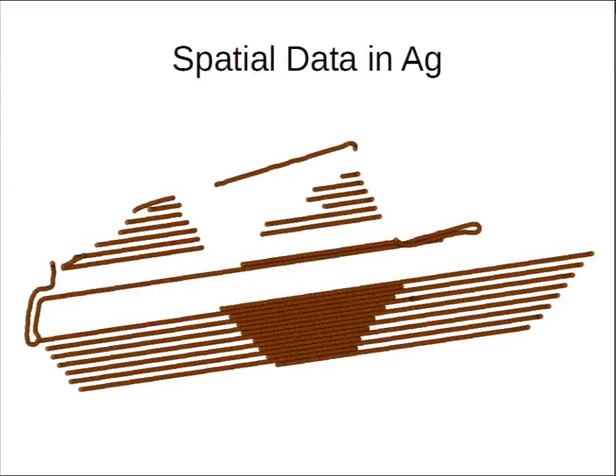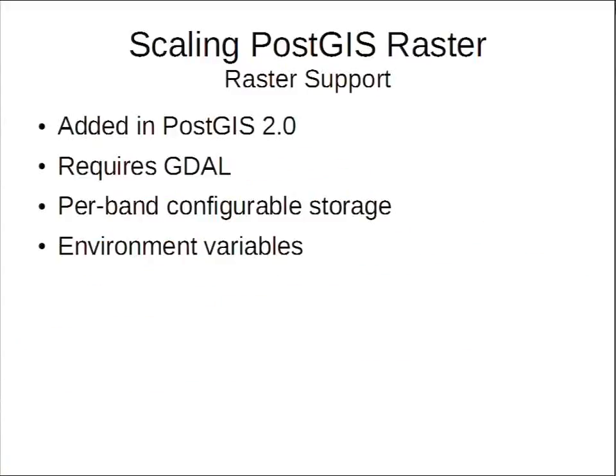I'm going to start with the two big problems I had dealing with ag. One is the question of scaling PostGIS Raster for handling large datasets. PostGIS Raster was added as part of PostGIS 2.0. It requires GDAL, mostly because of the warping APIs as well as flexible format support. It offers per-band configurable storage, as well as various environmental variables that you need to set for security reasons.